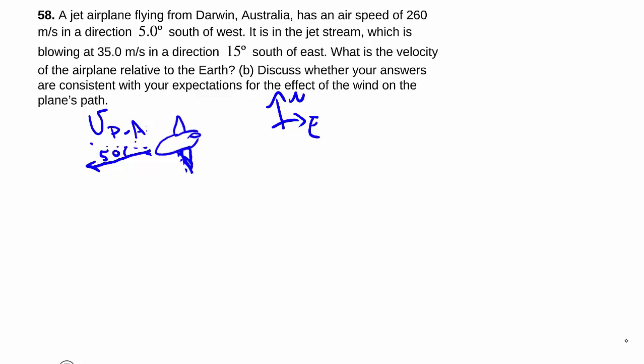But then it is in a jet stream that is moving at a certain speed in a direction 15 degrees south of east. So let's say there is east, 15 degrees south of east. So basically the plane is actually moving against the background that is moving in that direction. And that is basically the air relative to the ground.